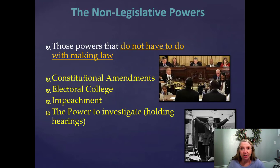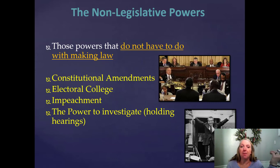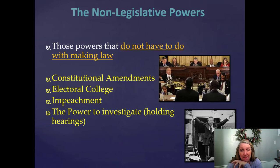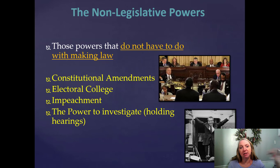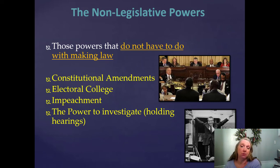We've talked about the legislative powers of Congress, which fall into expressed and implied, but Congress also has non-legislative powers — powers that do not have to do with lawmaking, but which the founding fathers felt belonged in Congress. For constitutional amendments, the president is not involved at all. Congress must propose the amendment, then it goes to the states. Congress is also involved in the electoral college — if the electoral college doesn't produce a winner, Congress steps in to complete that process.